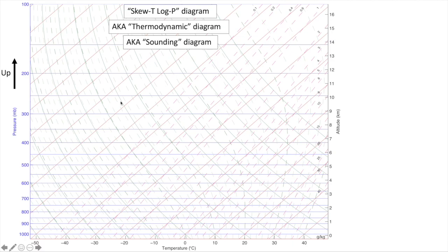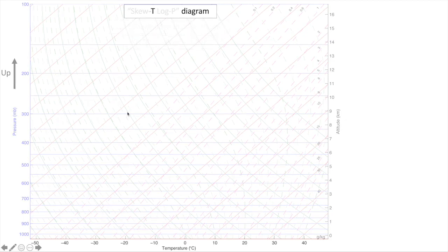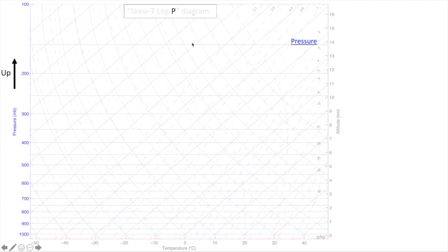There are five sets of lines in this diagram and we are going to go over each one of them one by one. The first two are in the name of the diagram. The T in Skew-T refers to temperature, which is our horizontal axis and spans the typical range of temperatures observed in the atmosphere from about negative 50 to 50 degrees Celsius. The P in Skew-T Log-P refers to pressure, which is our vertical axis, where up can literally be interpreted as being up in the atmosphere.